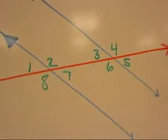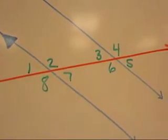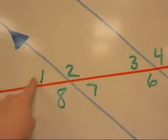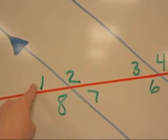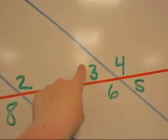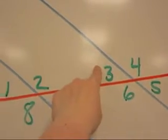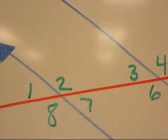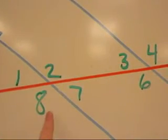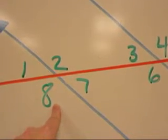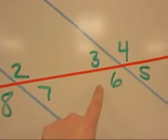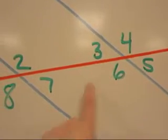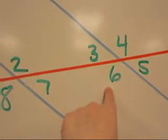The next angles we want to talk about are corresponding angles. Corresponding angles are in the same relative location. Notice that angle 1 is above the transversal but to the left of the parallel line. Angle 3 is above the transversal but to the left of its parallel line. Therefore, angle 1 and angle 3 correspond. Look at angle 8 — it is below the transversal and to the left of the parallel line. Angle 6 is also below the transversal and to the left of the parallel line. Therefore, angle 8 is corresponding to angle 6.